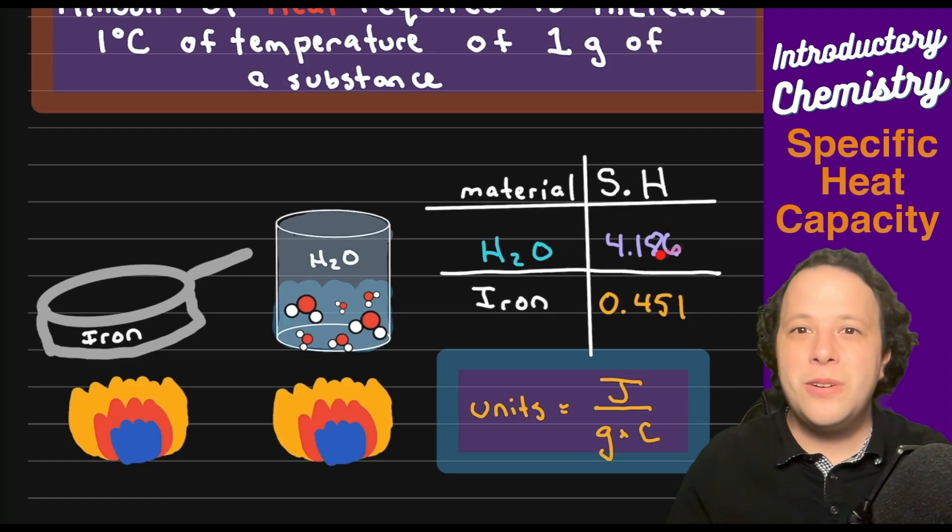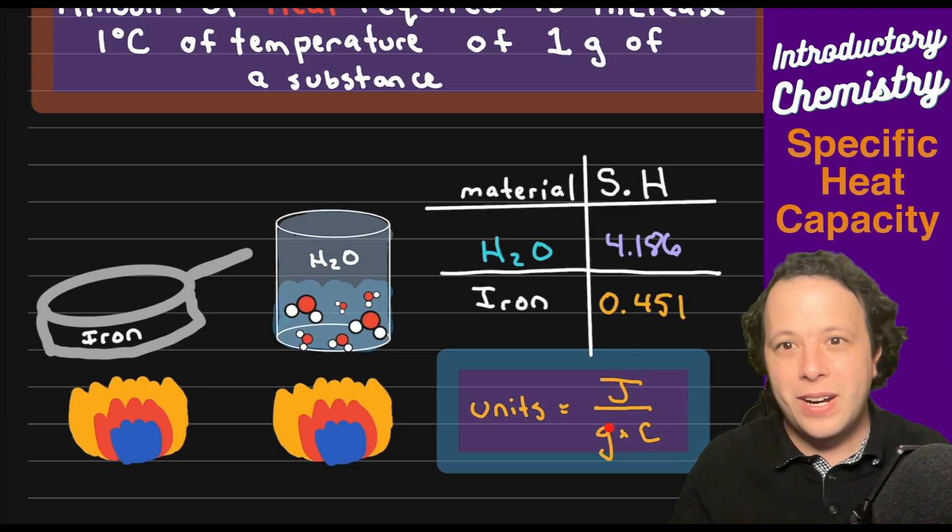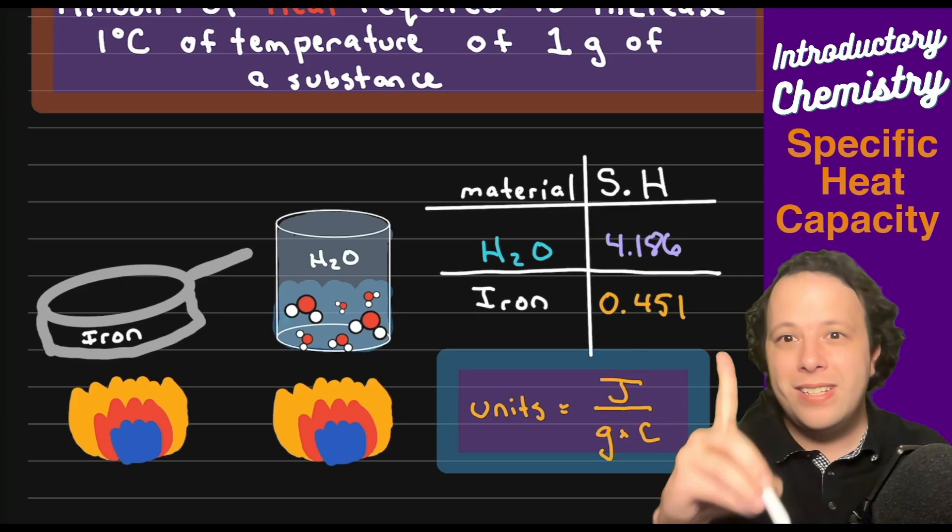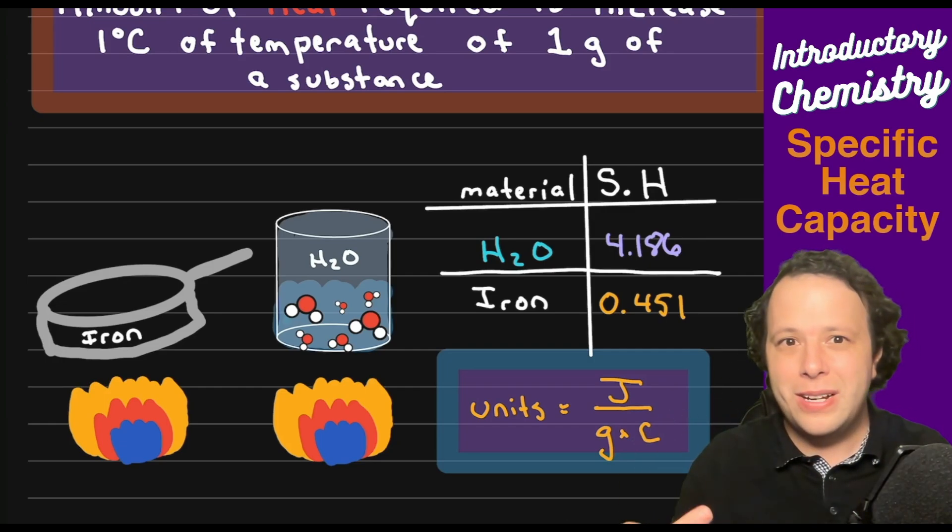Water has a specific heat of 4.186 joules over grams per Celsius. So 4.186 joules is required to heat up one gram by one single degree. That's a lot of energy.